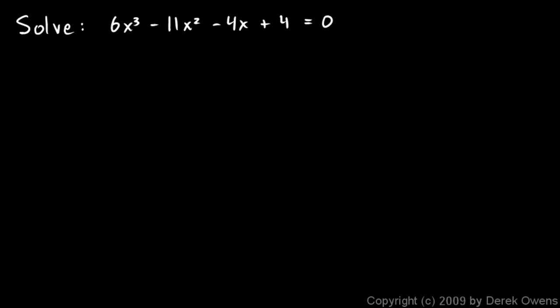Okay, here's one more example. We're told to solve this equation: 6x cubed minus 11x squared minus 4x plus 4 equals 0. Find all the values for x that will satisfy this equation. And since this is a third degree equation, we would expect to find three solutions. And we'll solve this by factoring this polynomial or finding the zeros of that polynomial. And we do this with the rational zeros theorem.